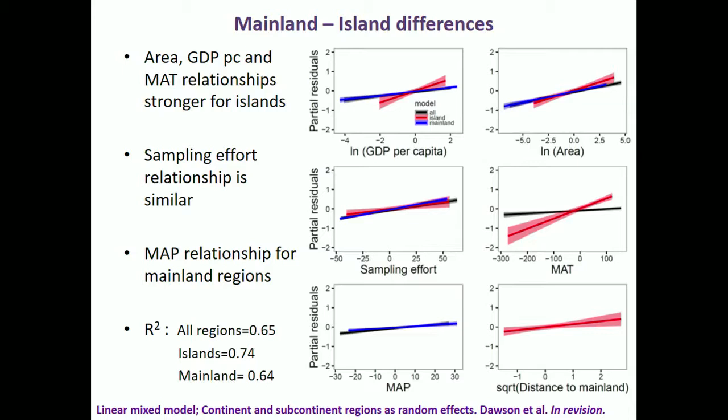Looking at the amount of variation explained by these variables for islands versus mainlands, we can see that for islands we're able to explain more variation in alien species richness than for mainland regions.